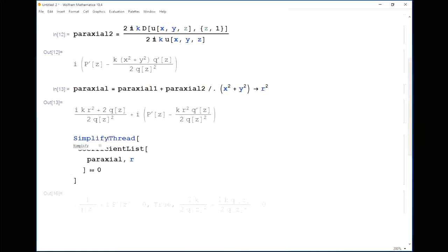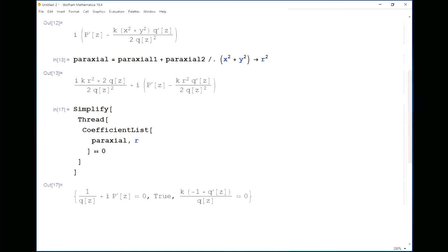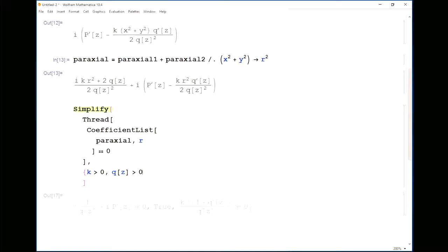So again, we just asked Mathematica to simplify this. And hopefully that will give us something a little bit simpler after we tell Mathematica that k is bigger than 0 and q of z is bigger than 0.